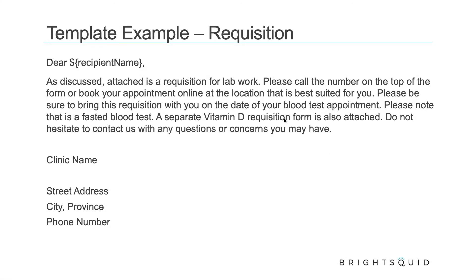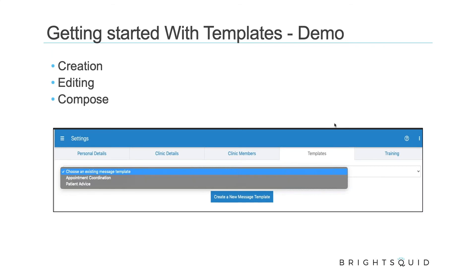A requisition template example reads: here's the lab work we want you to get done, please bring it with you, you should fast — and there's also a vitamin D requisition, make sure you bring them both. With that, Jeff hands things over to Mark for a quick demonstration on how to create templates.